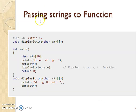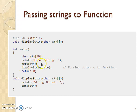Now how to pass strings to a function. Strings are nothing but a 1D array of characters. The base address of the 1D array is passed to the function — for example, get_string and display_string — and the same base address is collected in the array parameter. Passing a string to a function works exactly the same way as passing a 1D integer array to a function.